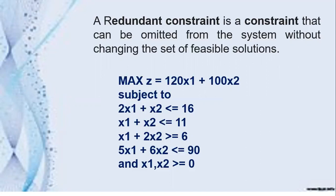Let's understand this problem by solving it. The problem says maximize z equals 120x1 plus 100x2, and there are four constraints and a non-negativity constraint.